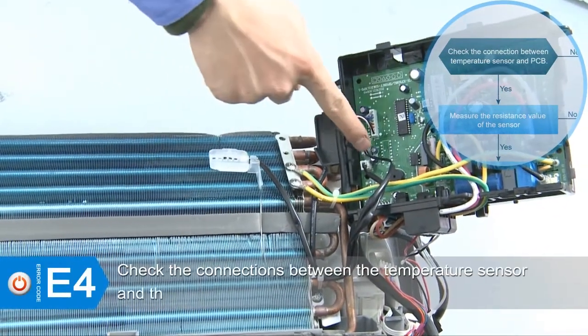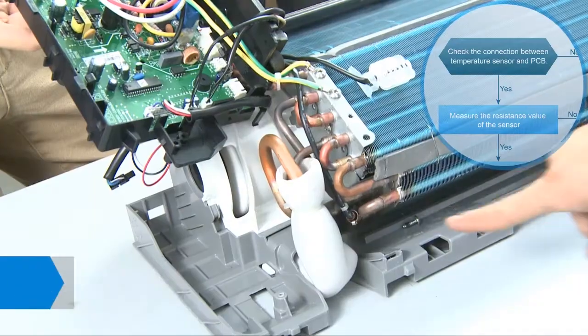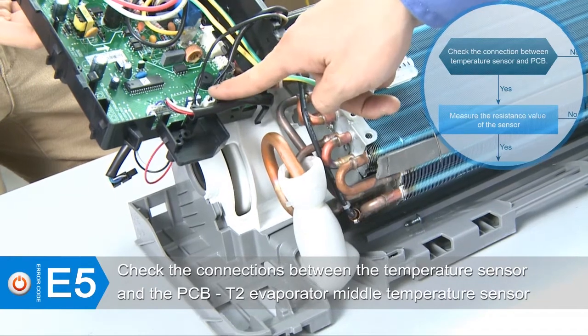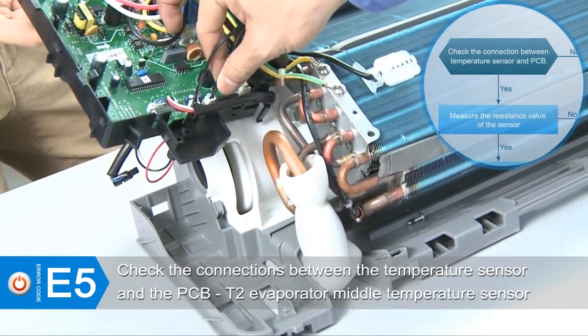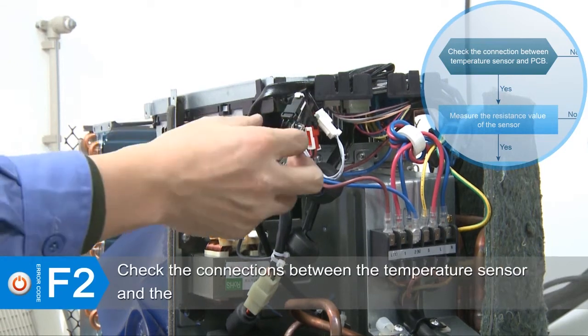This is T1, indoor room temperature sensor. This is T2, evaporator temperature sensor. This is T3, condenser temperature sensor.